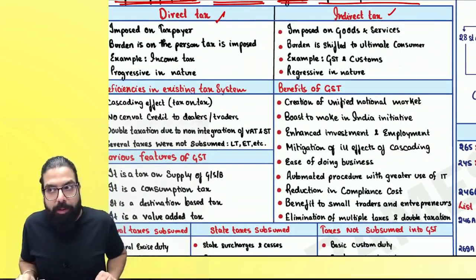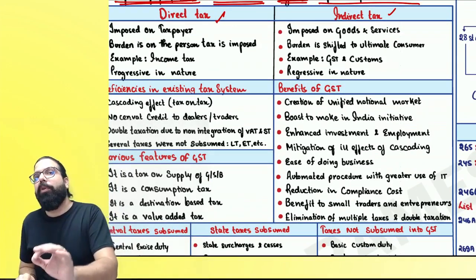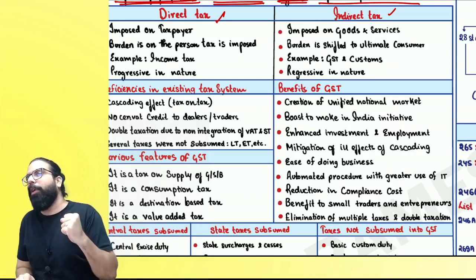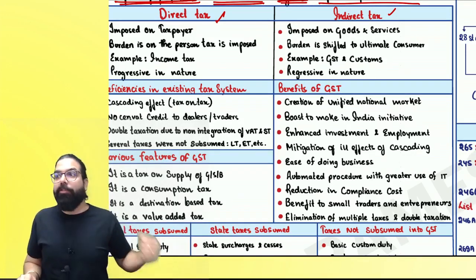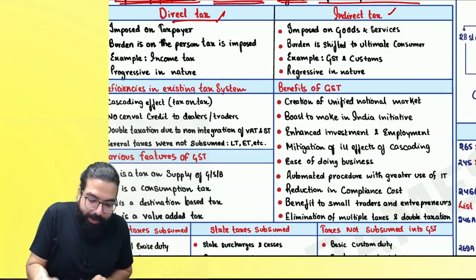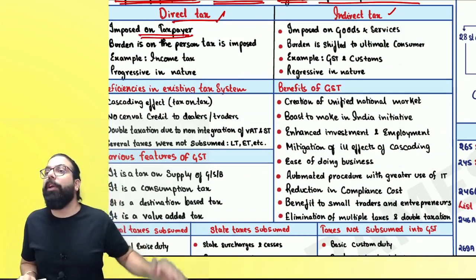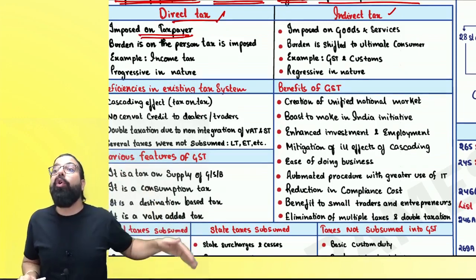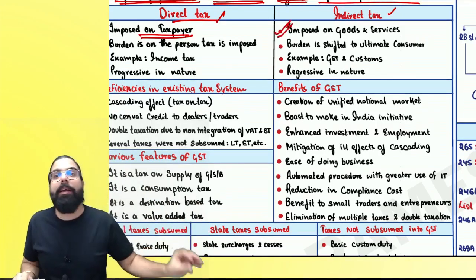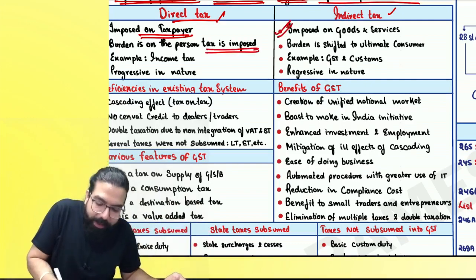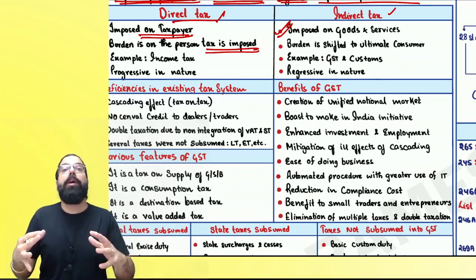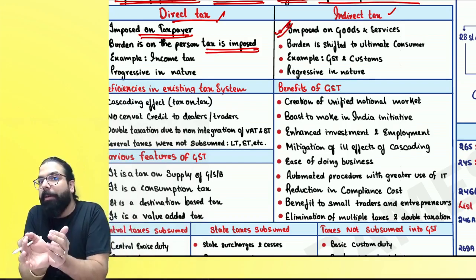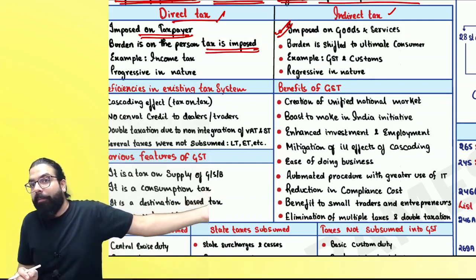Now, the difference between direct tax and indirect tax. We will revise this chapter completely. Direct tax is imposed on a taxpayer; indirect tax is imposed on goods and services. Direct tax — the burden is borne by me. Indirect tax is imposed on goods and services supplied by me, but borne by the ultimate consumer. Direct tax is income tax; indirect tax is GST and customs.